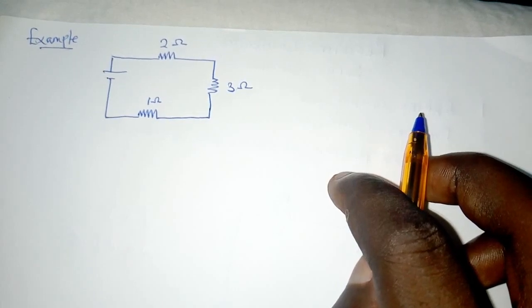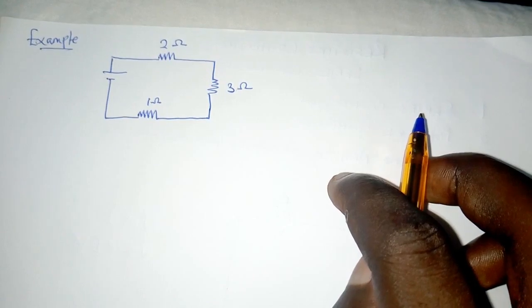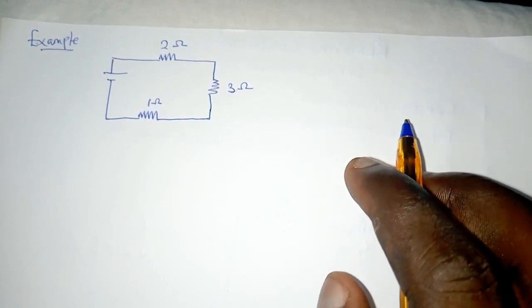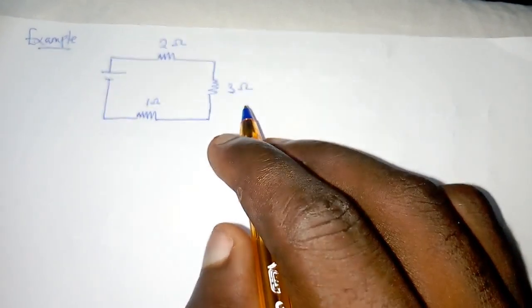In this example here, then we have to find the effective resistance that is going to be produced by these three resistors that we have provided. Now, all of these three resistors are in series since there is no node between them or some sort of junction between them.